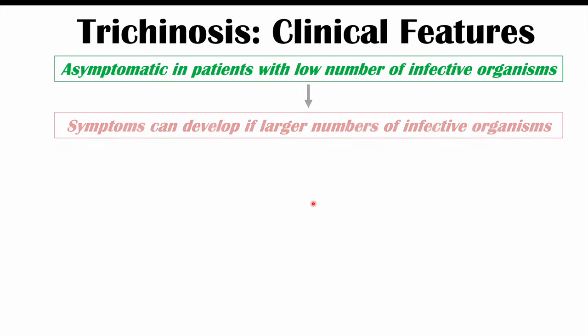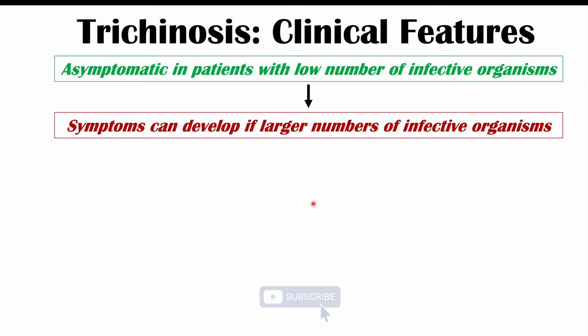Symptoms occur when there are larger numbers of infective organisms. If the patient has ingested large amounts of the Trichinella species, or had multiple exposures with an increasing burden of infective organisms, then we can see symptoms most commonly.